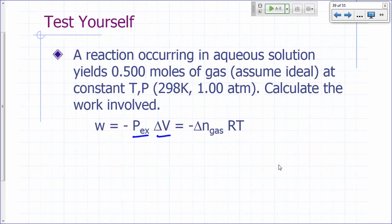Minus P external delta V. If you remember your ideal gas law, PV equals nRT. Anytime you have a change in the amount of gas in your sample, there's going to be a major change in the volume.